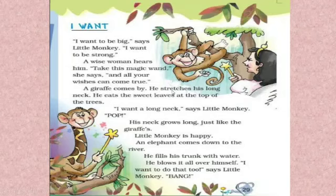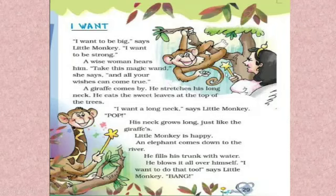A giraffe came by. Aap logon ko pata hai giraffe kaisa animal hai — uski neck kaisi hoti hai? Long neck. So this monkey thought: if I had a neck like a giraffe. The wise woman had told him that whatever he wishes for, he will get with the magic stick. So the little monkey wished for a giraffe-like neck — neck means garden — and you can see here, the monkey's neck became long like a giraffe.